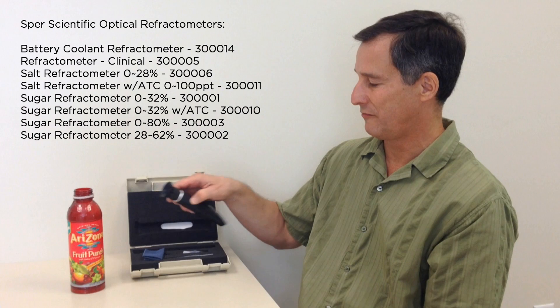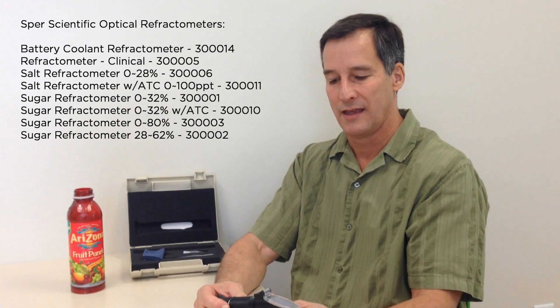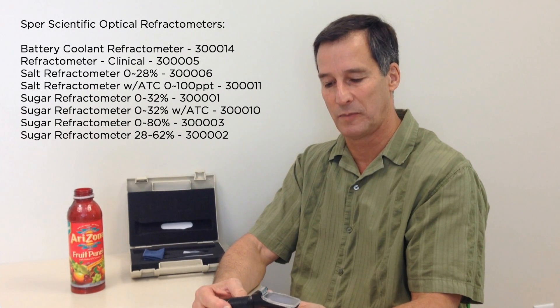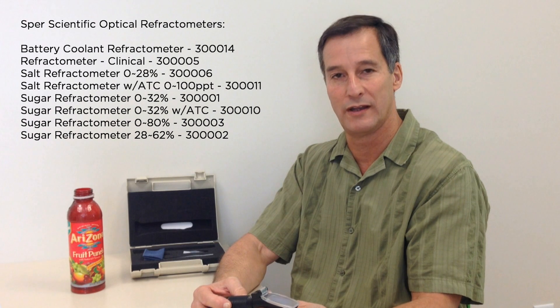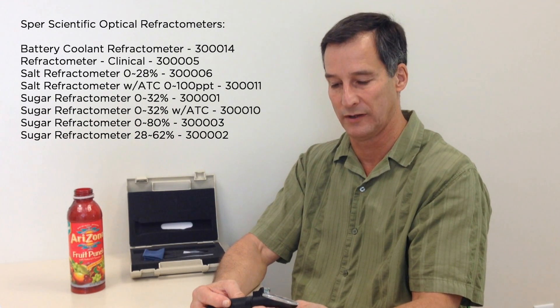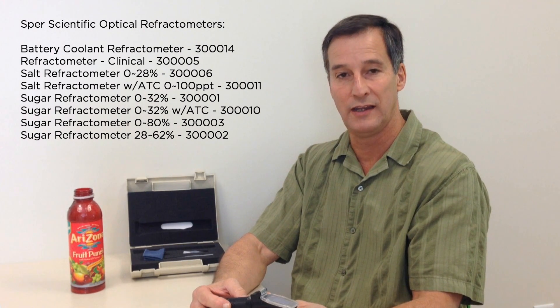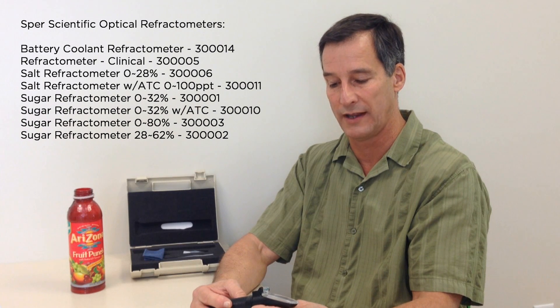Optical refractometers like this one have been around a long time. They provide a very inexpensive, simple, and accurate way to measure dissolved solids in a liquid. They don't require any batteries; they work on ambient light.